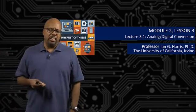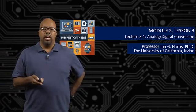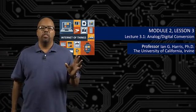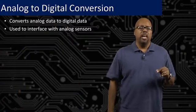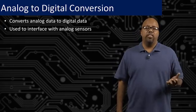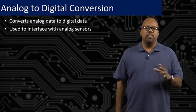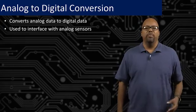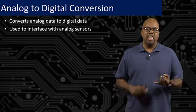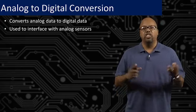These devices are sensing physical phenomena, and physical phenomena are often analog signals. Let me describe the difference between analog and digital briefly. Analog to digital is the same as the difference between real numbers and integers.